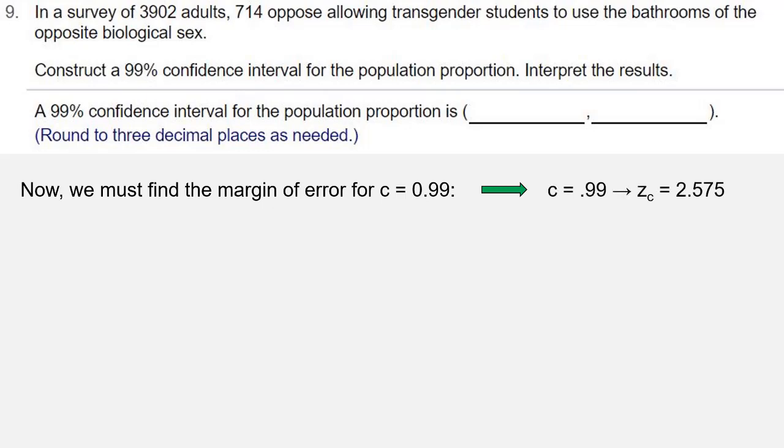The formula for the error is error equals z-sub-c times the square root of p-hat q-hat over n. So we'll insert the values that we've found. z-sub-c is 2.575, p-hat is 0.183, q-hat is 0.817, and n was 3902.